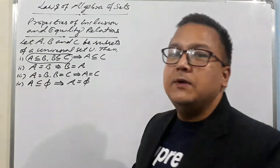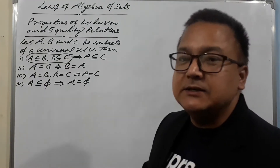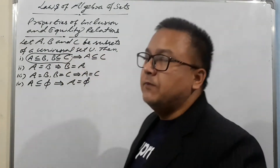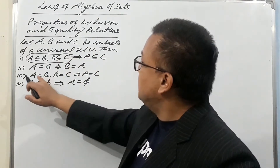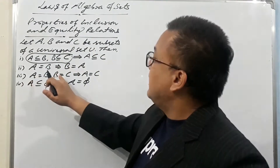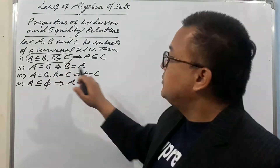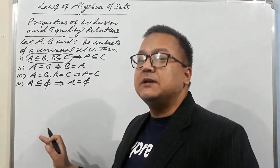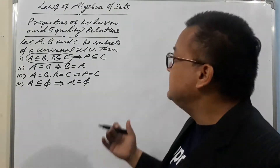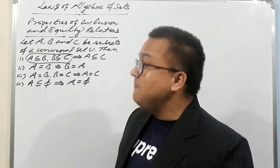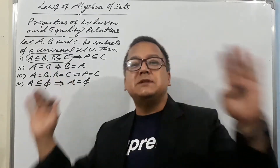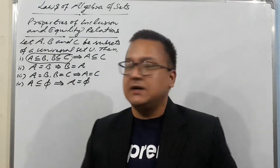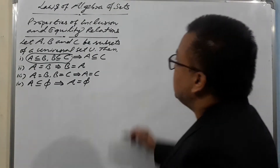Property two: if A = B, then B = A. Property three: if A = B and B = C, then A = C. Property four: if A ⊆ φ, then A = φ. This means if any set is a subset of the empty set, then that set must itself be empty. Now let's start the proofs.